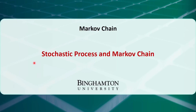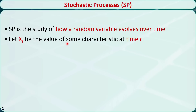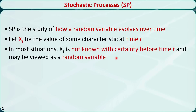In this video, I will introduce some basic concepts of stochastic processes and Markov chains. A stochastic process is also called a random process. It describes how a random variable evolves over time. Let xt be the value of some variable at time t. xt is a random variable and it is not known with certainty before time t.